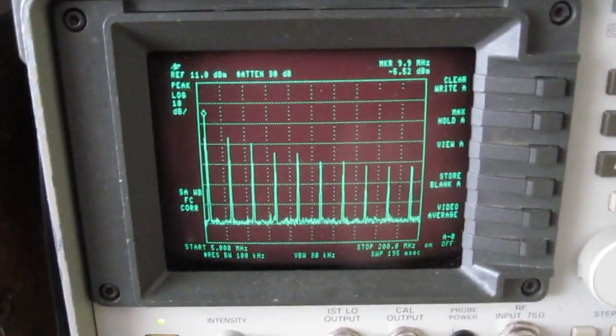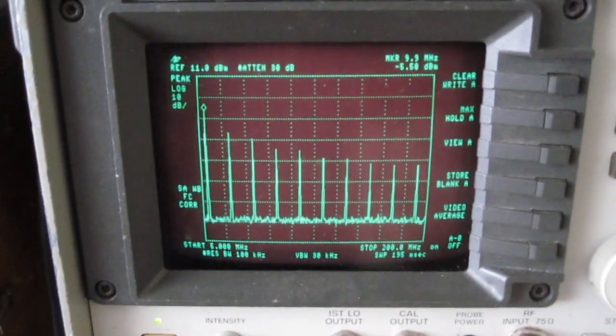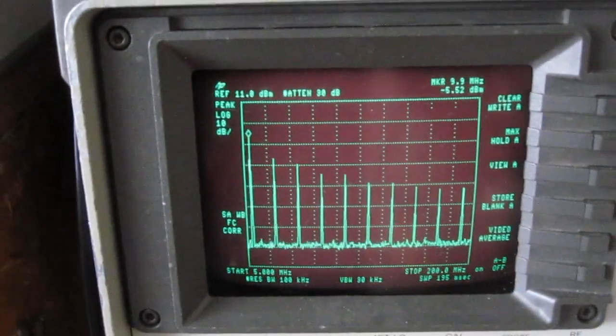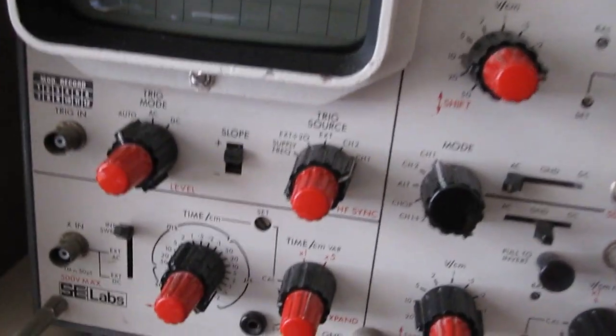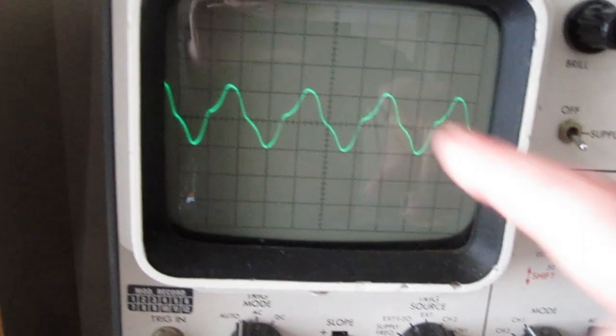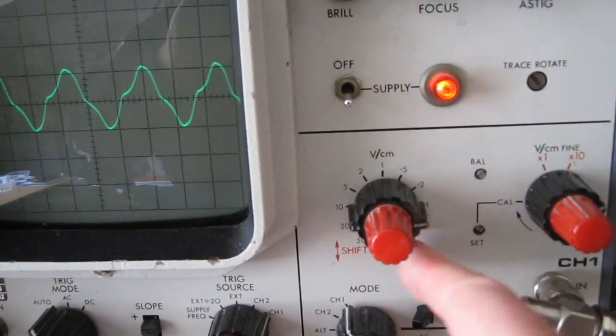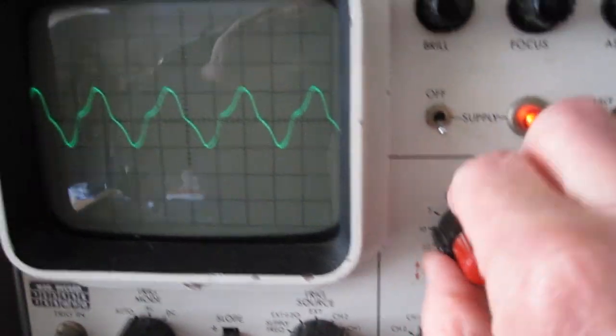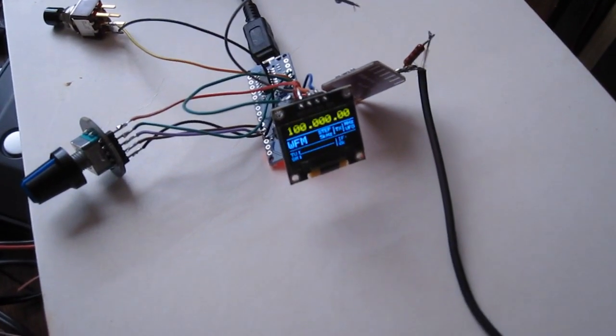However then the impedance will of course be much higher and you lose a lot of signal, and I was curious about what the signal would look like on the oscilloscope and you see this waveform and it is a lot less voltage because I switched this also to another position.